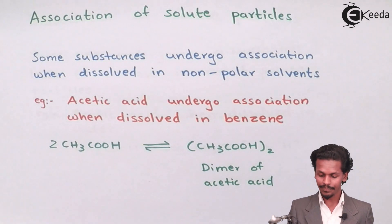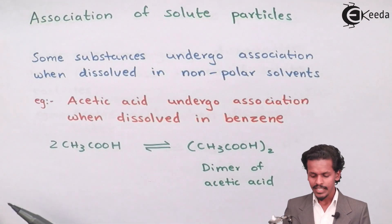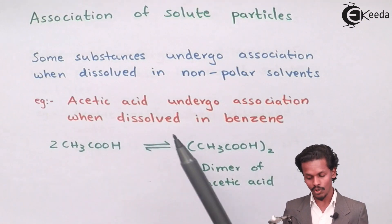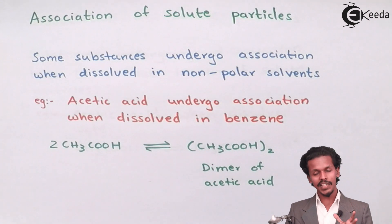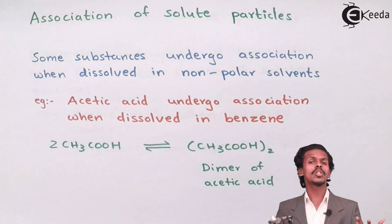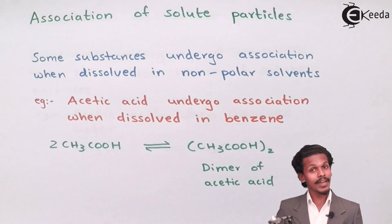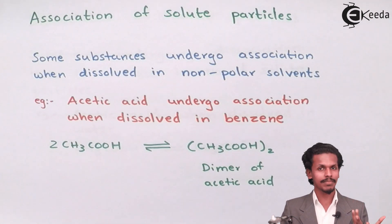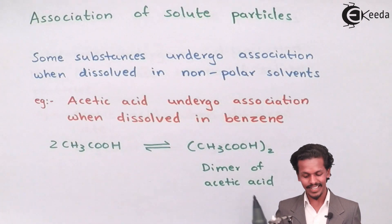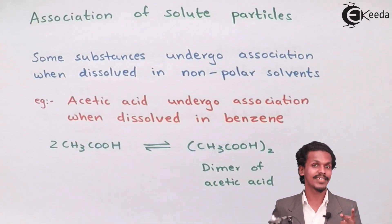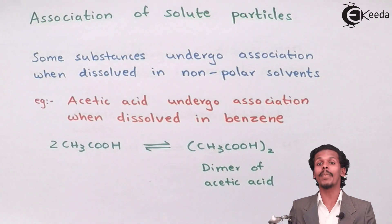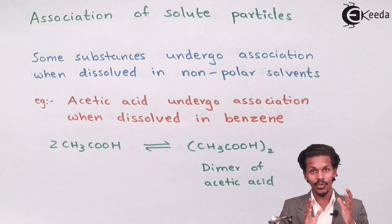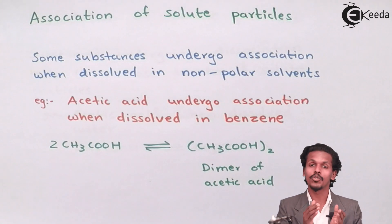Let us see what association means with an example. Some substances undergo association when dissolved in non-polar solvents. For example, acetic acid undergoes association when dissolved in benzene. In this case, 2 moles of acetic acid, when dissolved in benzene, combine with each other to form a dimer of acetic acid. Initially the number of particles is 2, but because of this association, the number of particles becomes 1. Therefore, the colligative property has decreased because the number of particles has decreased.